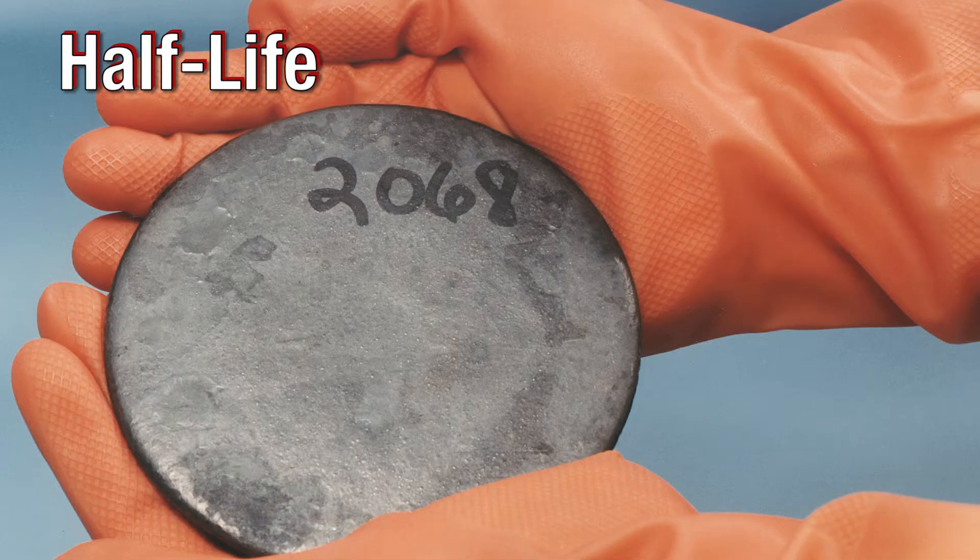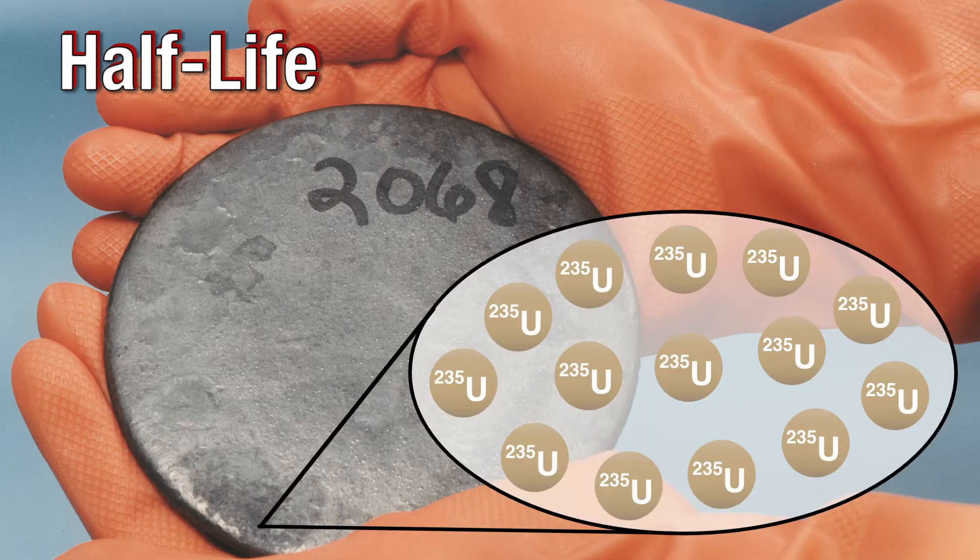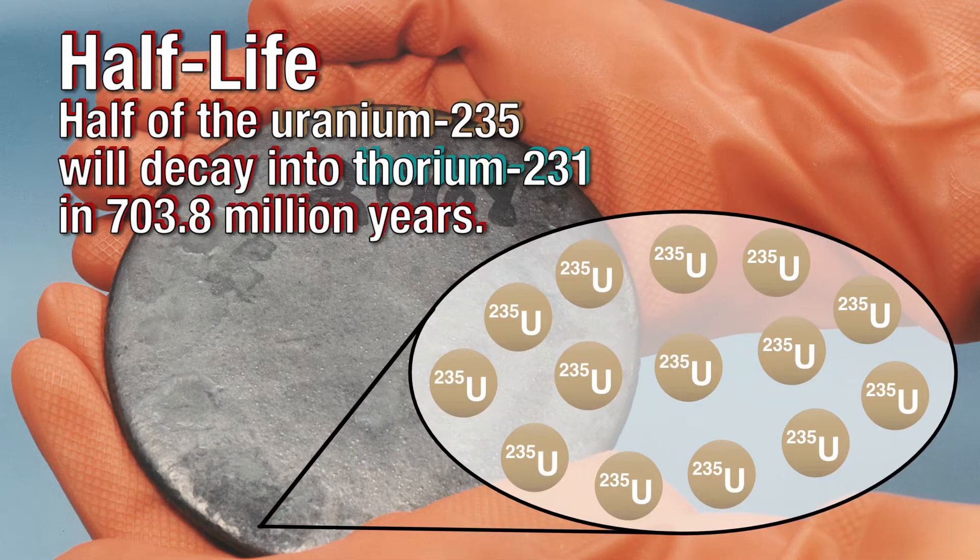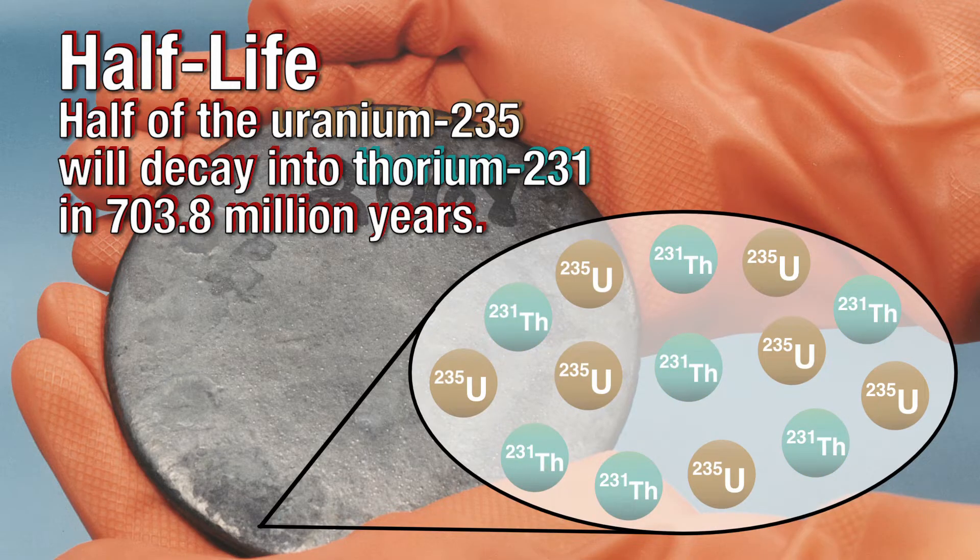In order to understand radioactive dating, you must understand the concept of half-life, which is the amount of time it takes for half of the atoms of a given radioactive substance to decay.